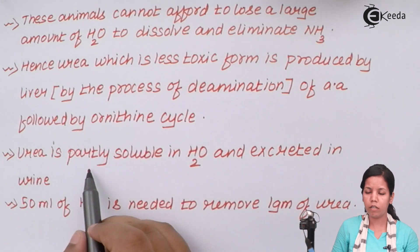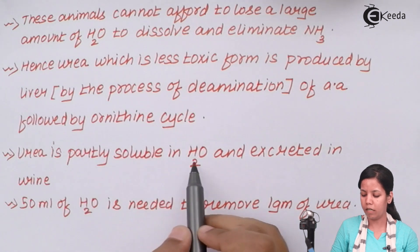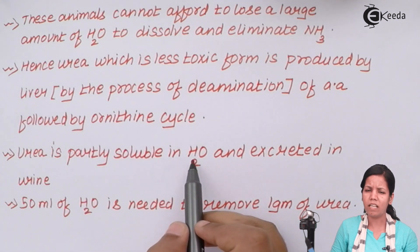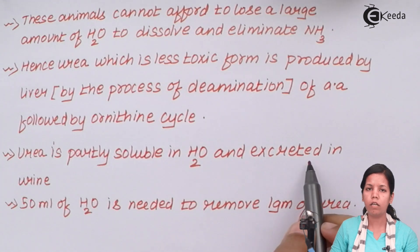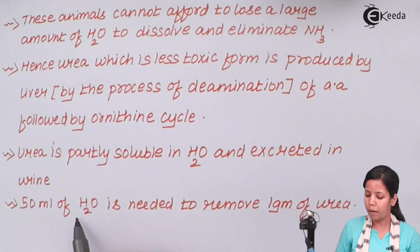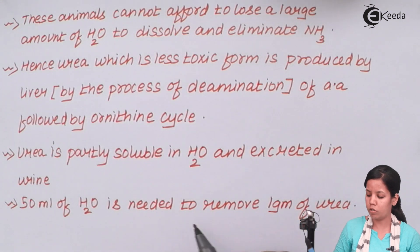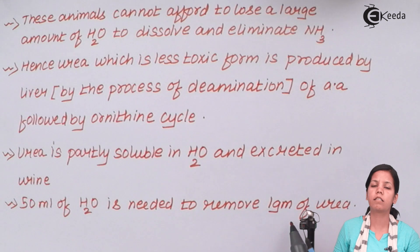Now urea is partly soluble in water. Most of the time urea is partly soluble in water molecules and it is secreted in urine in the terrestrial animals, birds or aves. 50 ml of water would be needed to dissolve 1 gram of urea in these aves.